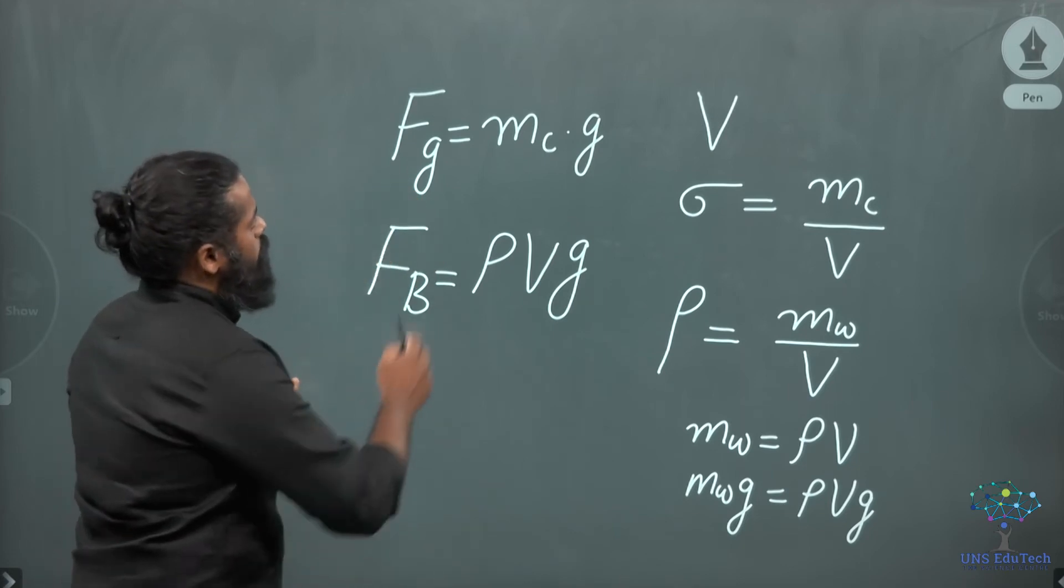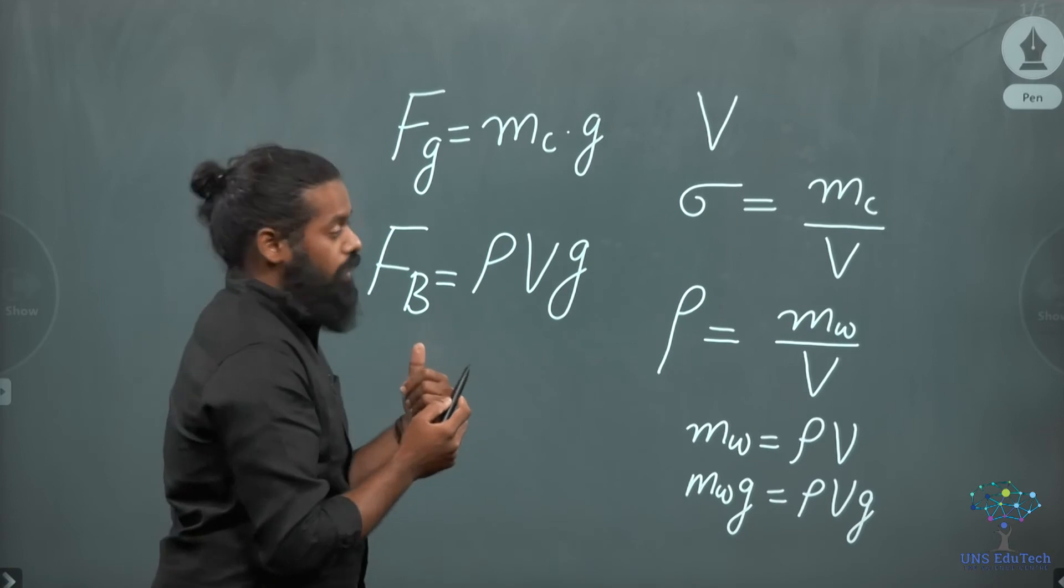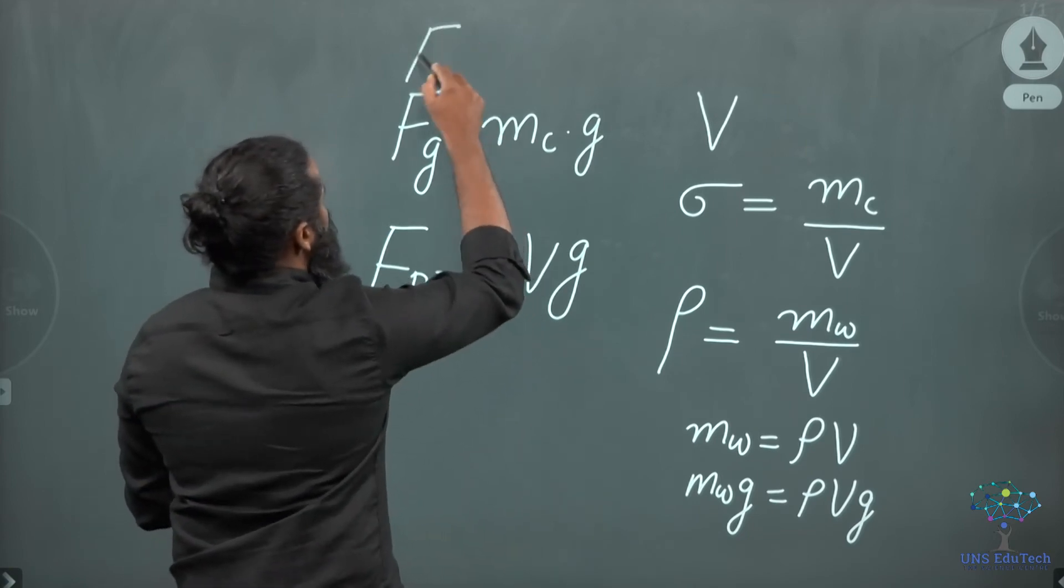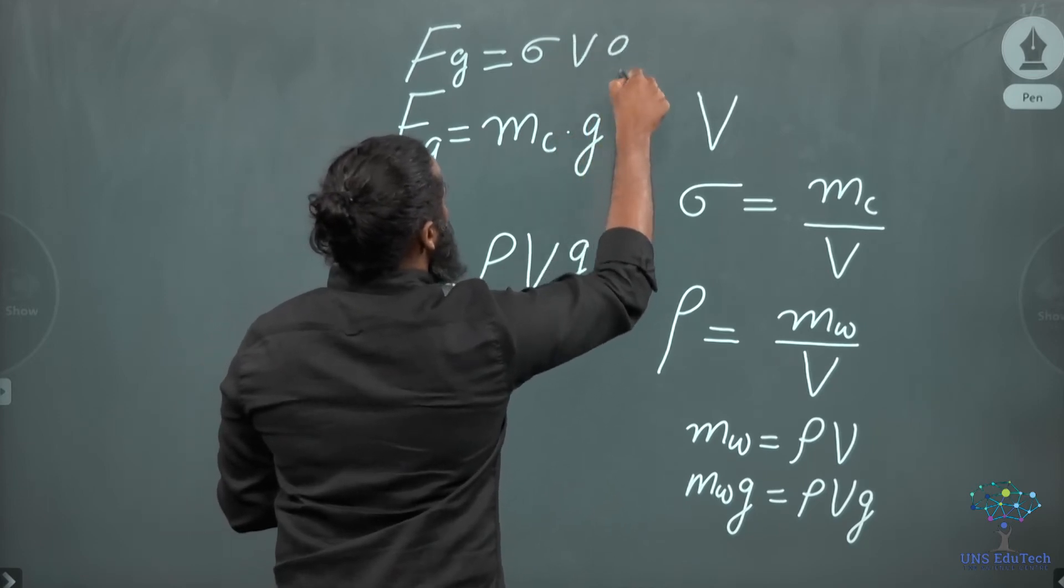Now, FG we can replace. FG we can replace with density. So mass will be equal to sigma times V. So we can write down FG will be sigma times V into G.